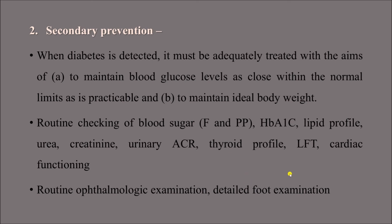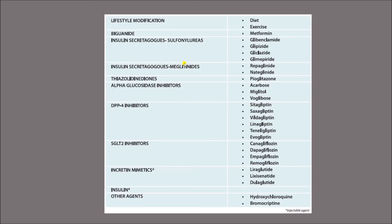Secondary prevention also involves thyroid profile, liver function tests, cardiac function assessment via ECG and echocardiography, routine ophthalmological examination to screen for diabetic retinopathy, and detailed foot examination to detect diabetic foot. The modes of intervention under secondary prevention include early diagnosis and treatment through these investigations, along with lifestyle modification including diet and exercise.